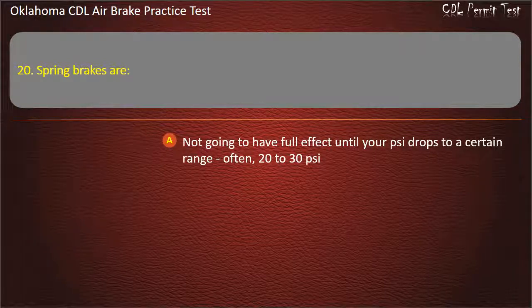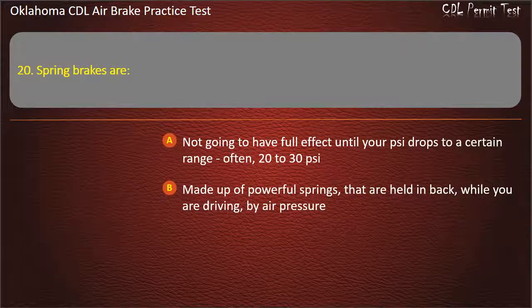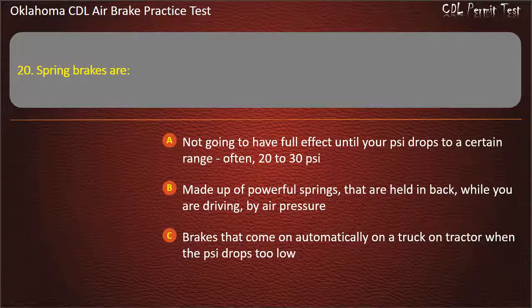Question 20. Spring brakes are: not going to have full effect until your air pressure drops to a certain range, often 20 to 30 pounds per square inch; made up of powerful springs that are held back while you are driving by air pressure; brakes that come on automatically on a truck or tractor when the air pressure drops too low; or all of the above. Answer: All of the above.